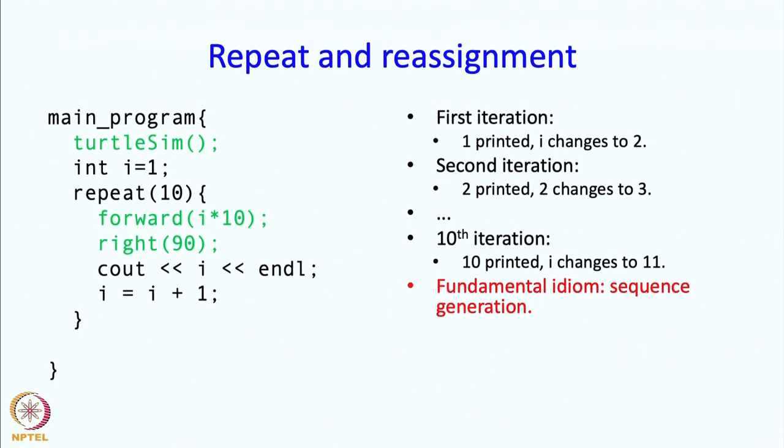So first it will be 10, next it will be 20, then it will be 30 and so on. So this is sort of like drawing a square but the side length is increasing. So this is going to cause something like a rectangular spiral. Let us take a look at this.